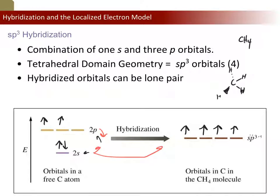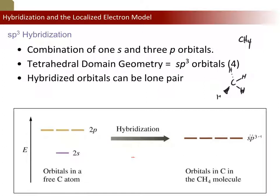Hybridization not only allows us to account for single electrons available for bonding, but it can also represent a pair of electrons living in a hybridized orbital. Hybridized orbitals don't always have to have lone electrons — they can be a lone pair. To illustrate this, I'm going to erase what I did for carbon and map the electrons for oxygen in the H2O molecule.